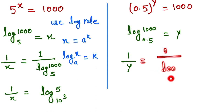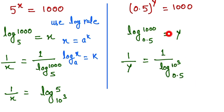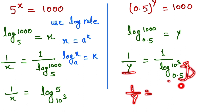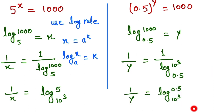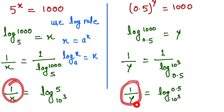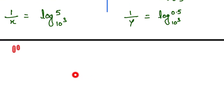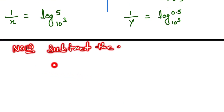So 1/y equals 1 divided by log base 0.5 of 1000, and 1000 can be written as 10^3. Interchanging the base and power in the log, 1/y equals log base 10^3 of 0.5. Now we have both 1/x and 1/y, so we subtract: 1/x minus 1/y.